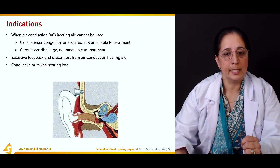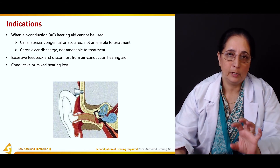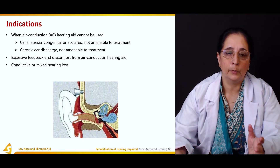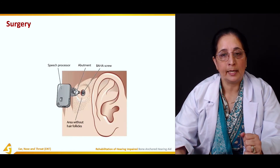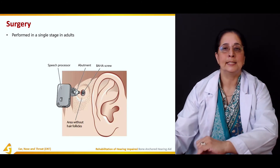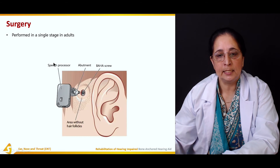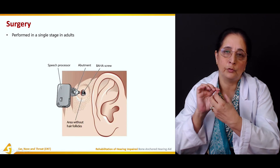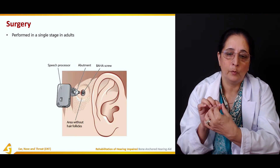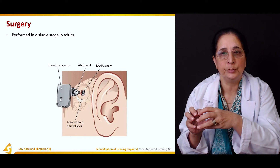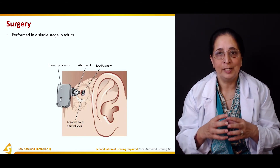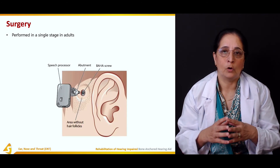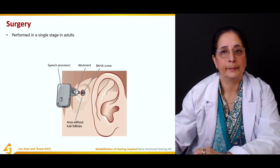Conductive or mixed hearing loss is another indication, as the bone anchored hearing aid is useful for both types. Regarding the surgery, in adults it is performed in a single stage. The screw is placed in the bone, the abutment is attached to the screw, and the sound processor is then attached — three components are involved.